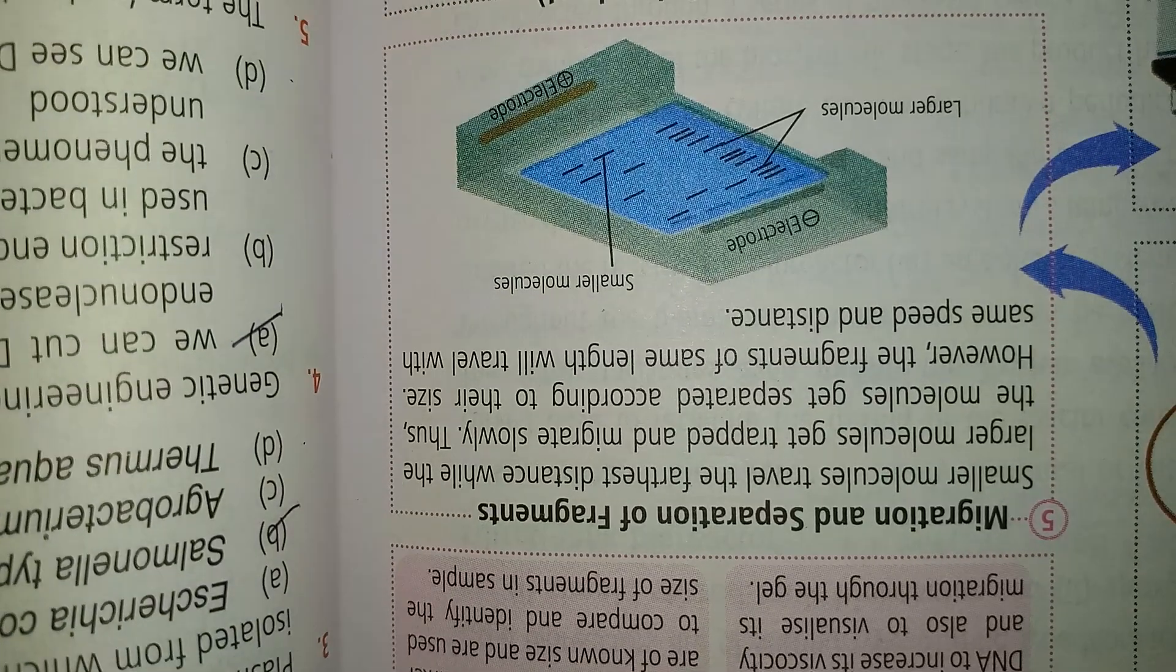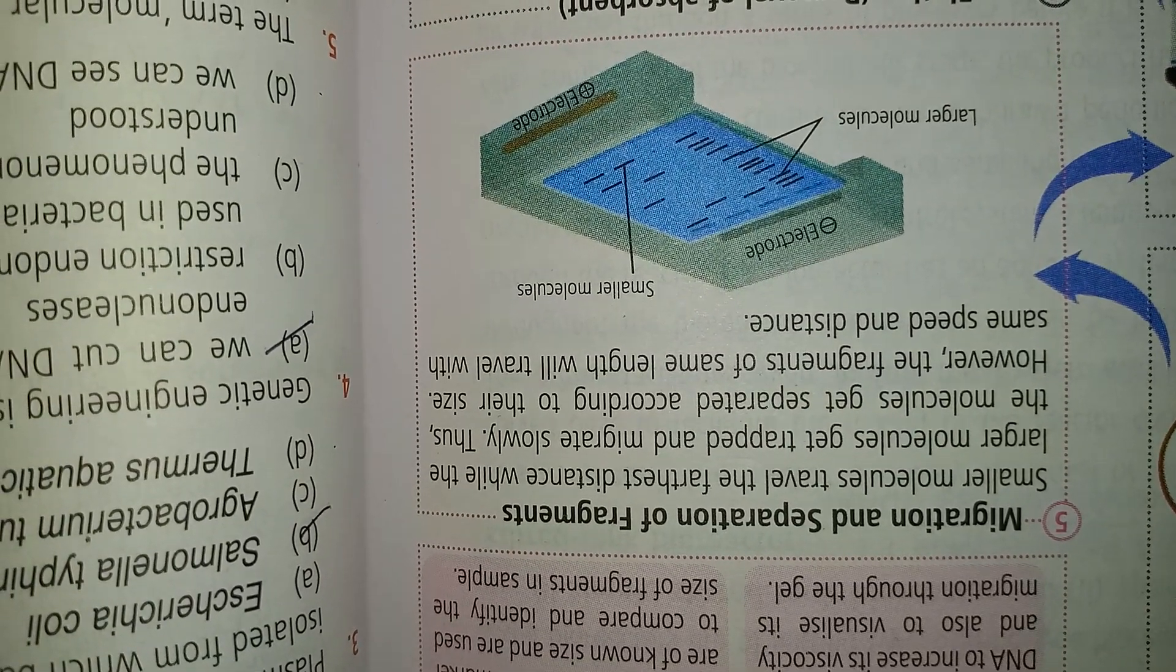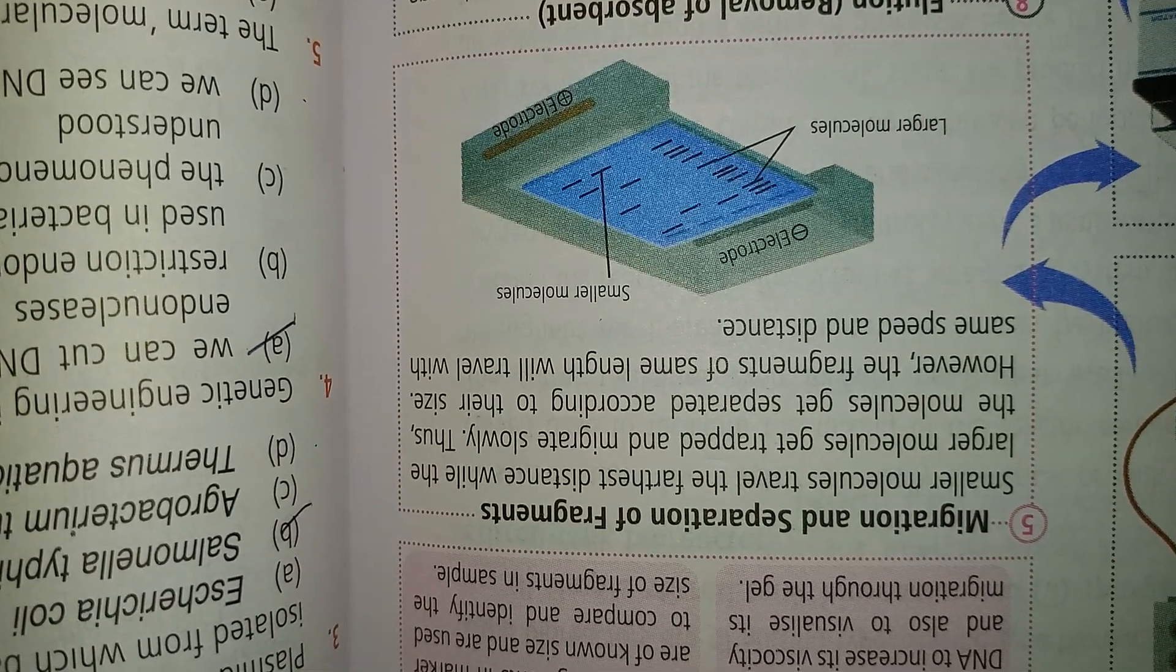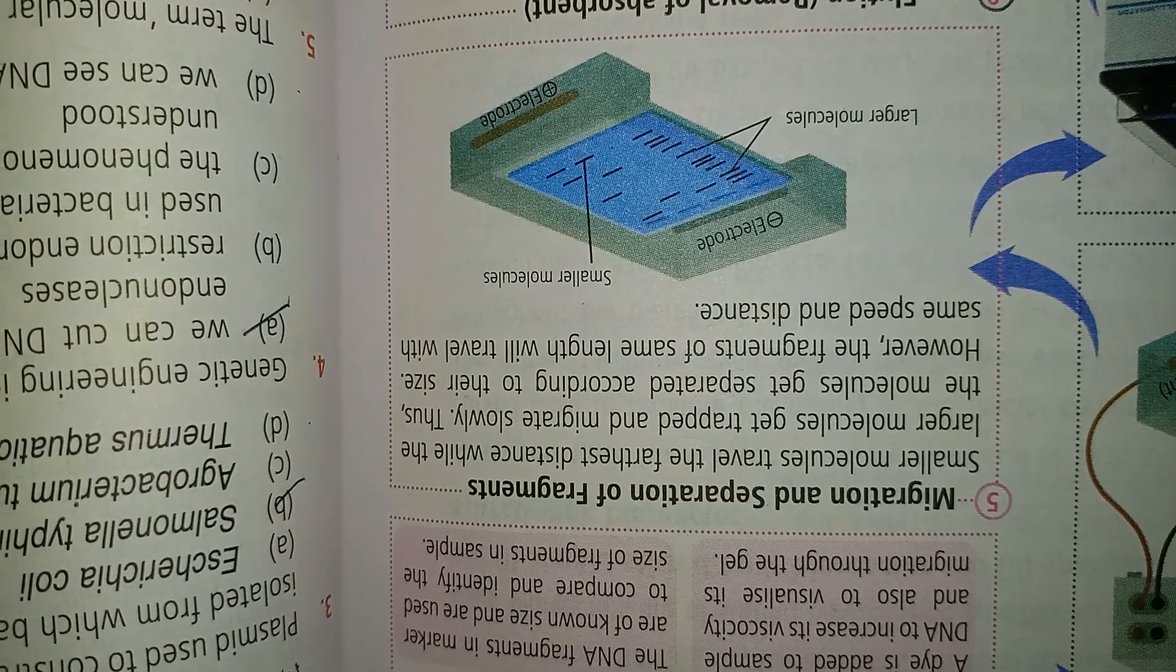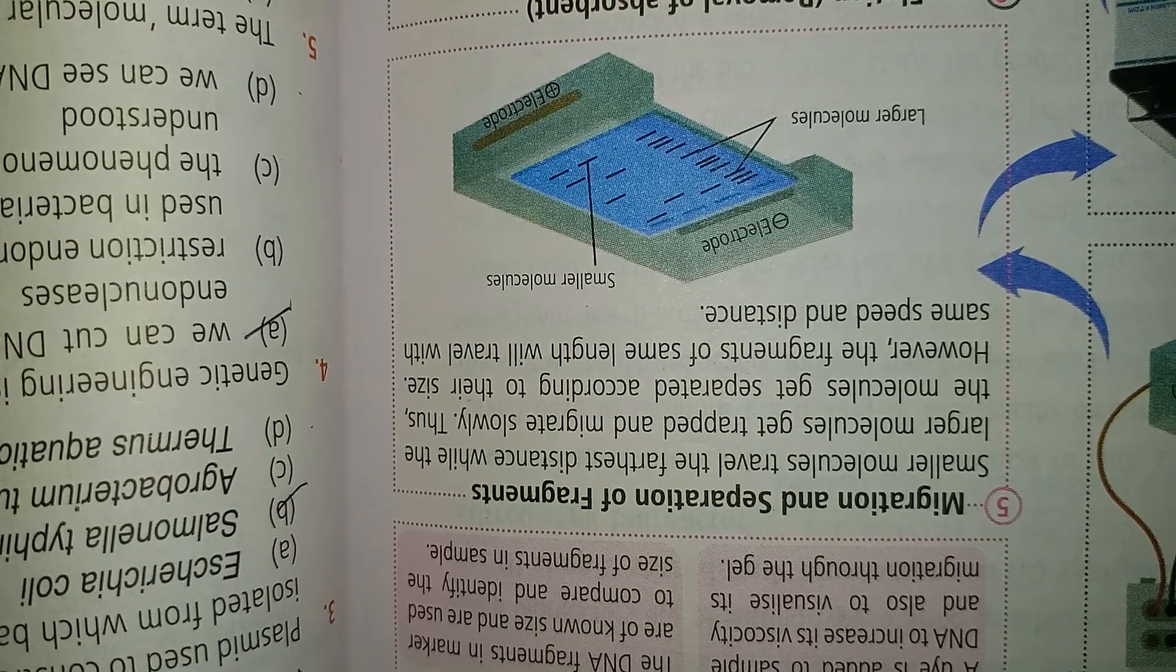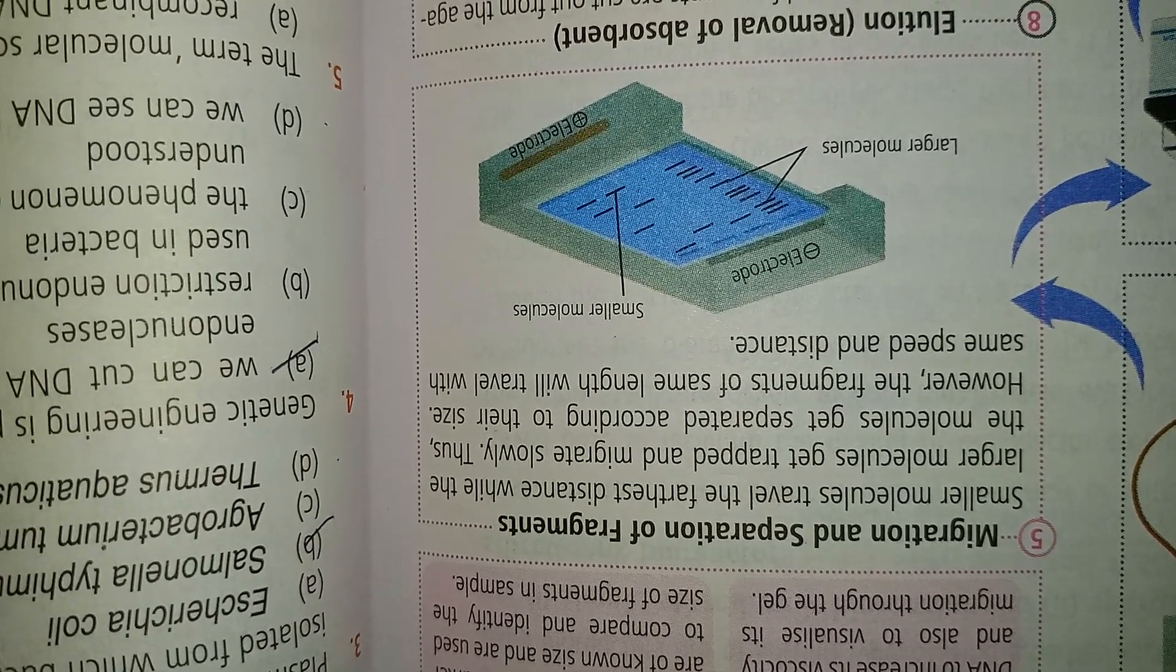Migration and separation of the fragments: small molecules traverse a greater distance while larger molecules get trapped and migrate slowly. Thus molecules get separated according to their size. However, fragments of the same size will traverse with the same speed and distance.